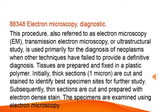This procedure, also referred to as electron microscopy (EM), transmission electron microscopy, or ultrastructural study, is used primarily for the diagnosis of neoplasms when other techniques have failed to provide a definitive diagnosis. Tissues are prepared and fixed in a plastic polymer. Initially, thick sections of 1 micron are cut and stained to identify best specimen sites for further study. Subsequently, thin sections are cut and prepared with electron-dense stain. The specimens are examined using electron microscopy.